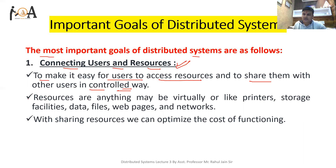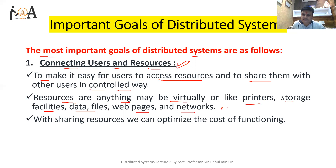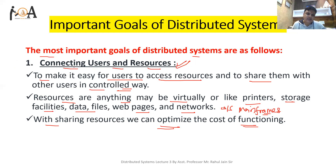Users can control resources in a very easy manner. Resources can be anything — maybe virtual or physical — like printers, storage facilities, data files, web pages, networks, operating systems, or mainframes. By sharing resources we can optimize the cost of functioning. So the first and most important goal is connecting users and resources at various geographical locations.